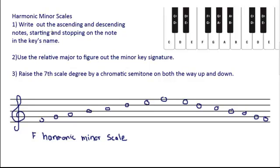In order to write harmonic minor scales, the first step is to make the natural minor scale. So the first step is to write out the notes ascending and descending. I've done that in this example to save time.